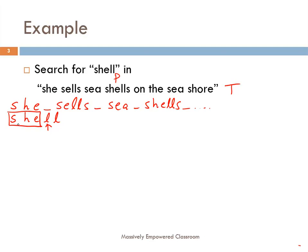So now what do we do? We need to look for another position in the text to start doing this comparison. In a smart algorithm, you might look for the next occurrence of S, because the first letter of the pattern is S. But here we do not do anything like that. We simply advance it one position and write 'shell' there. The very first letter does not match in this case — this is S, that is H. So we advance it by one more position. We advance by just one position each time.